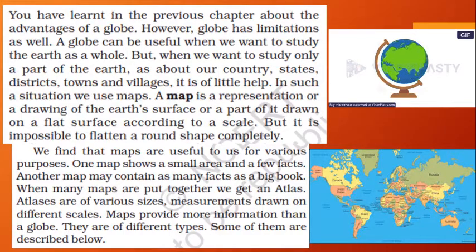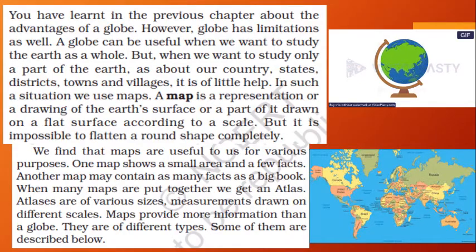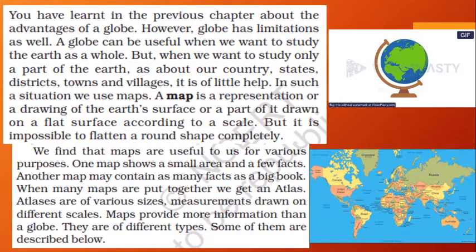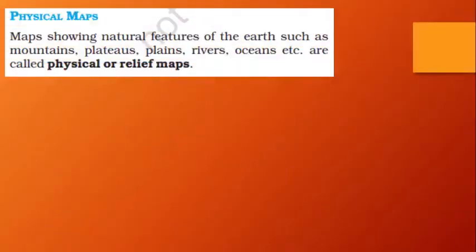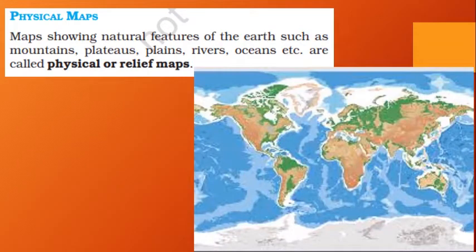Maps provide more information than the globe. There are different types of maps, some of which are described below. In an atlas you can see each country in very fine detail — all cities, districts, towns and villages. Let's now look at the first type of map: the physical map.